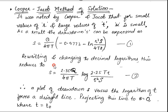Hello students, welcome to Groundwater and Hydraulics class. In today's class we will discuss one more method — that is the Cooper-Jacob method of solution. This was noted by Cooper and Jacob that for a small value of r and the large value of t, the value of u is small.